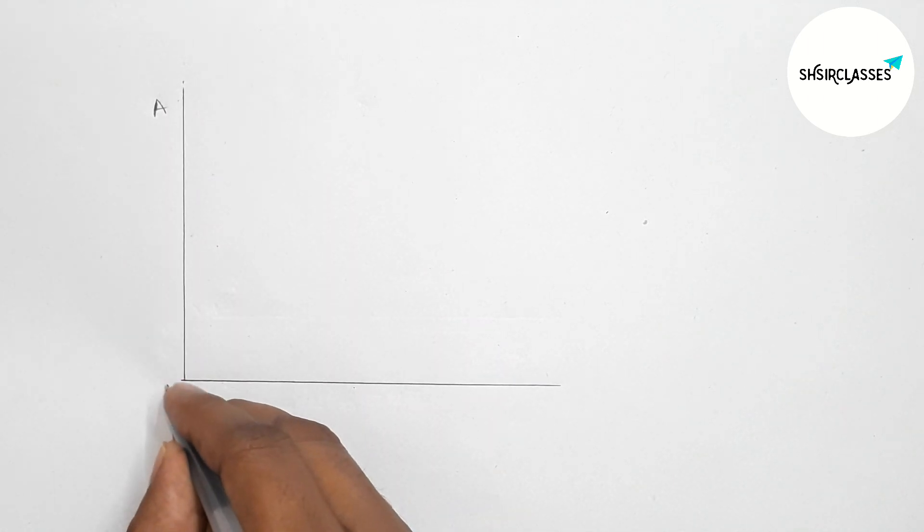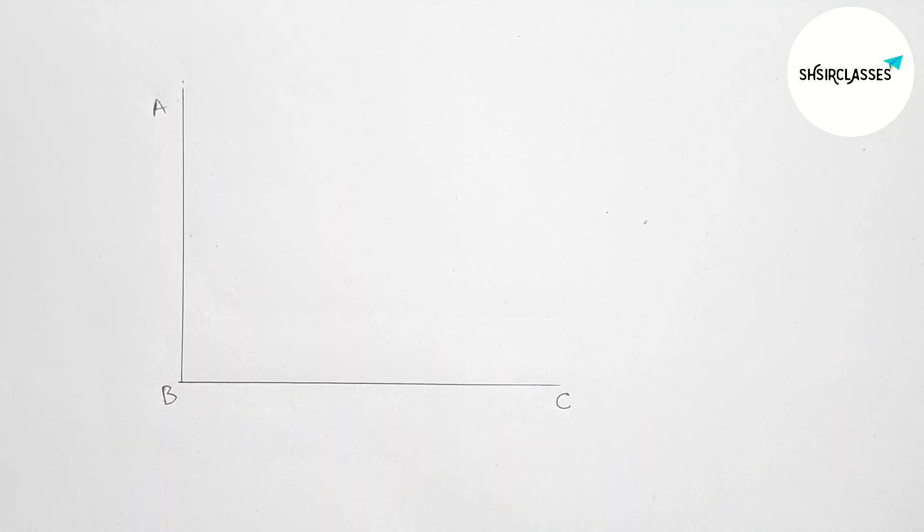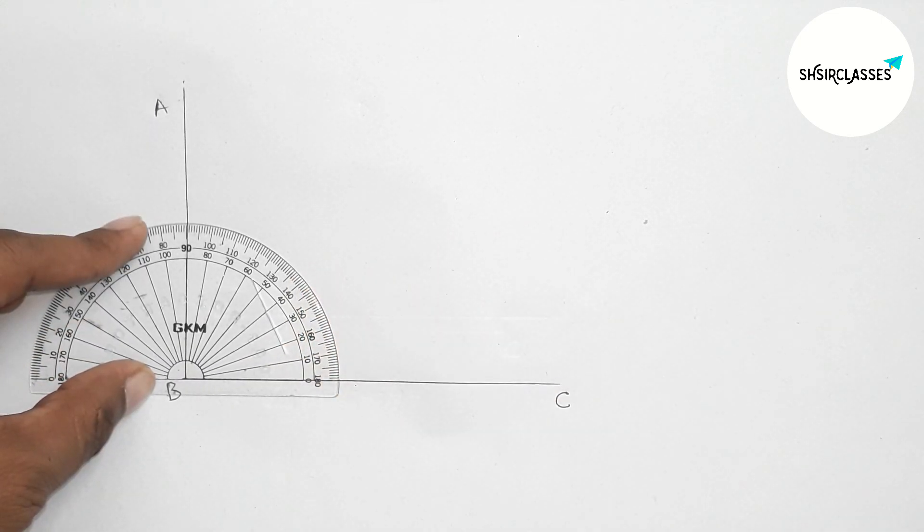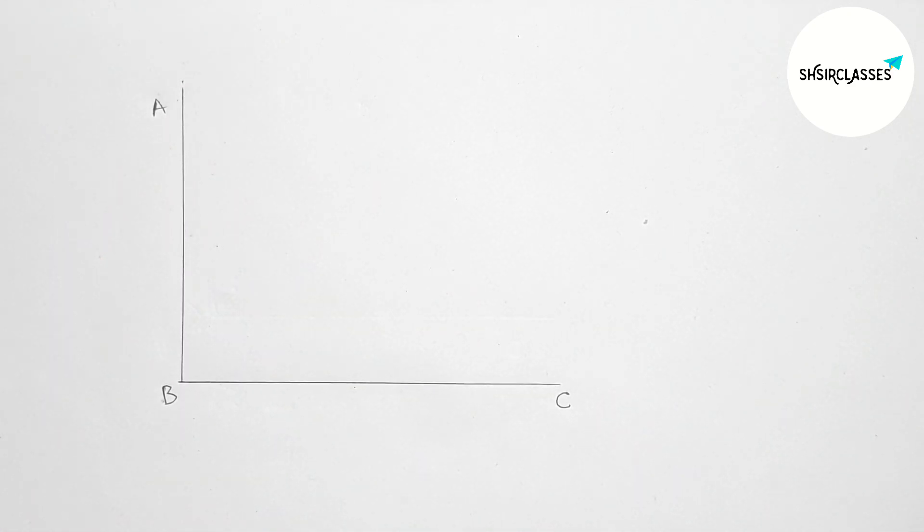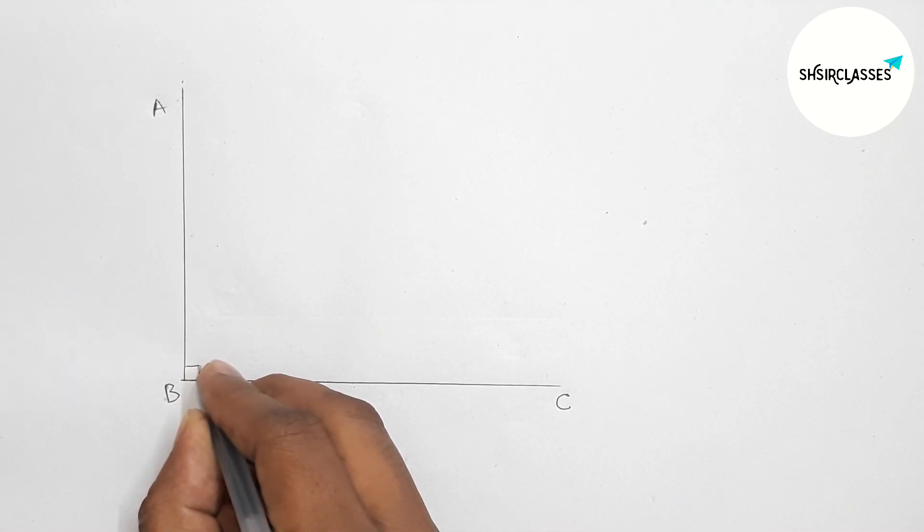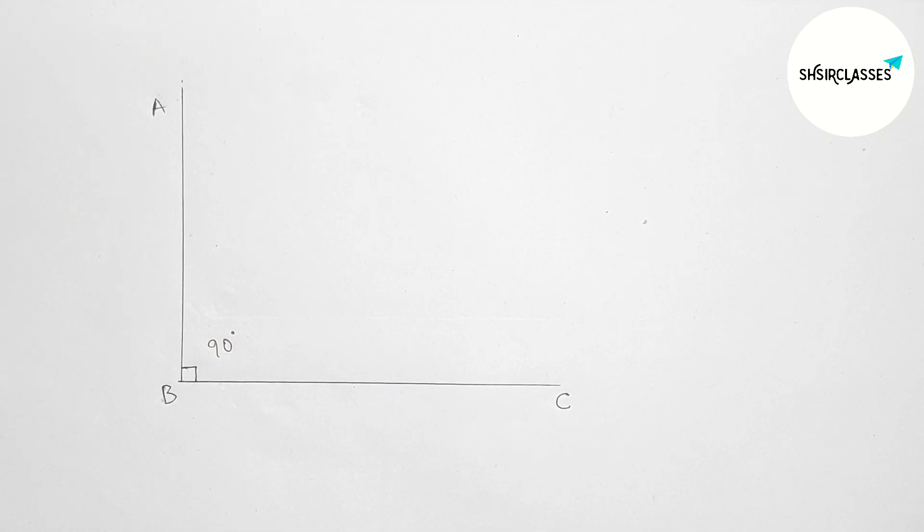First, measuring whether it is 90 or not. This is perfectly 90 degree angle. Now marking here by this way, marking 90 degree angle. Therefore, angle ABC.